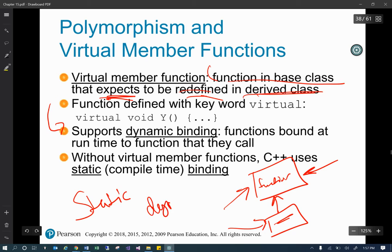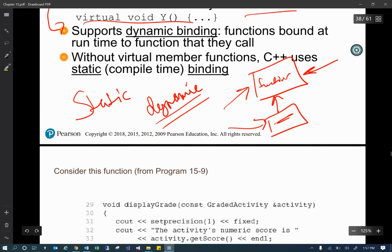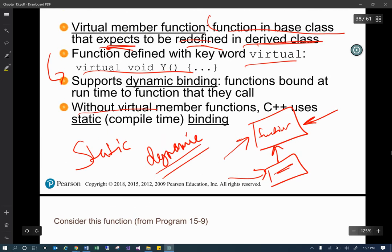Now here is again where one of those places that it's just going to be confusing at first. Bear with me. And what happens is there's two types of binding, and I don't want to get in this slide too much into it because we're going to talk about it in another slide, but there is static binding and then there is dynamic binding. So when you do virtual member functions, they will support dynamic binding. Without virtual member functions, it uses the static binding which is compile time.